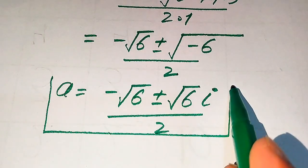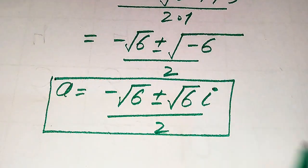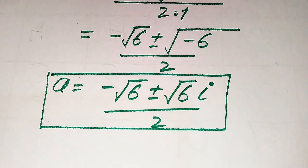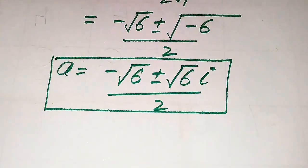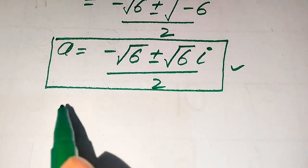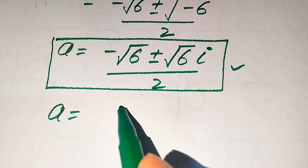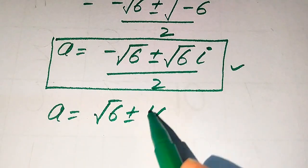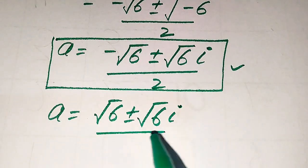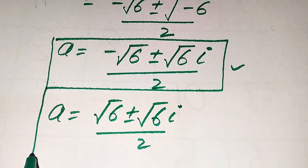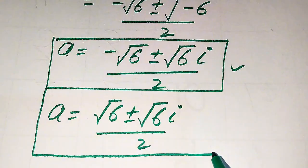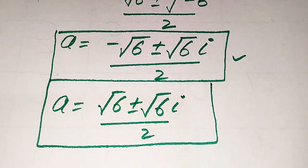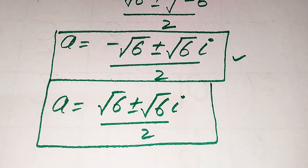Finally, there are four roots of the given equation: [√6 ± √6·i] / 2 and [−√6 ± √6·i] / 2. These are the total four roots of the given equation and this is our final answer. Thank you so much for watching this video — please subscribe to my channel for more exciting videos.